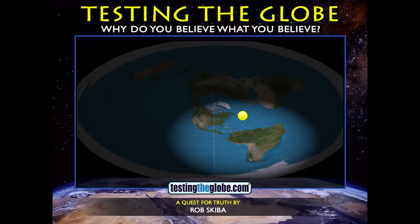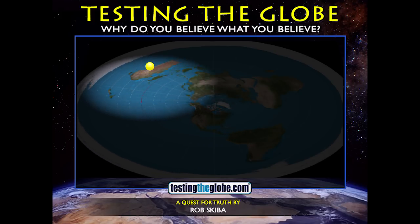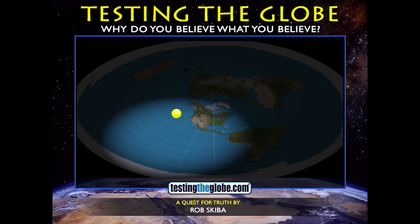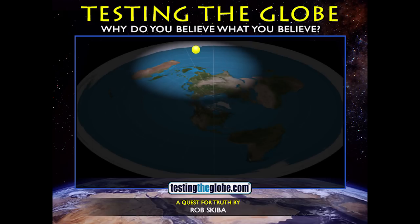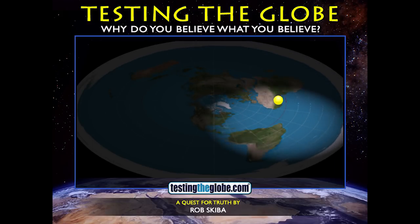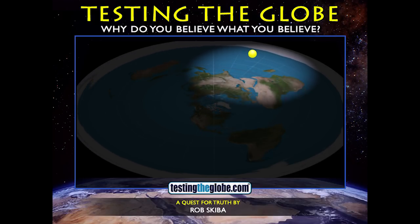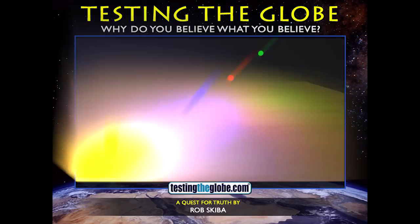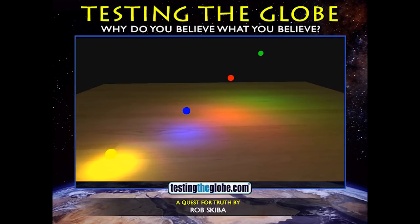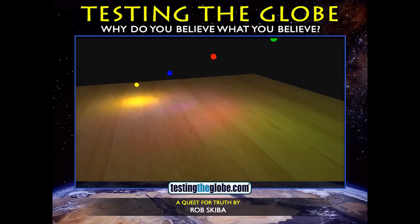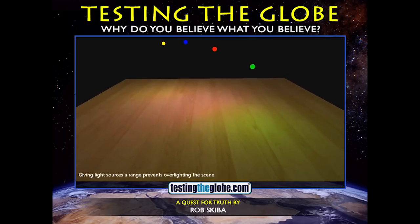I created this animation — a lot of people have used it and mirrored it. I used a 3D software called Poser, which allows you to pose and move 3D objects. I created a circular flat earth map, created a little ball, and made the ball a point light. A point light is basically just a point of light that you can adjust the parameters for — how much light it throws off.